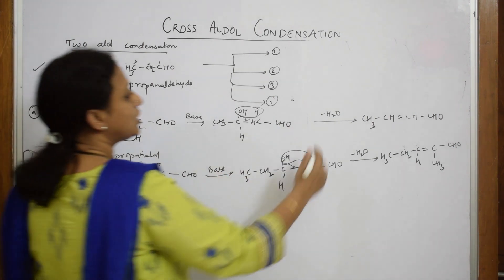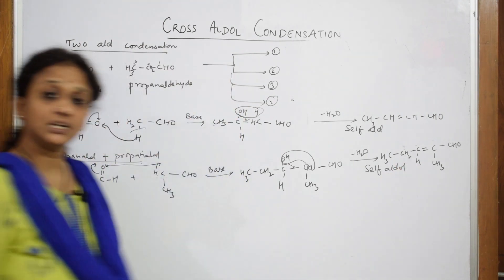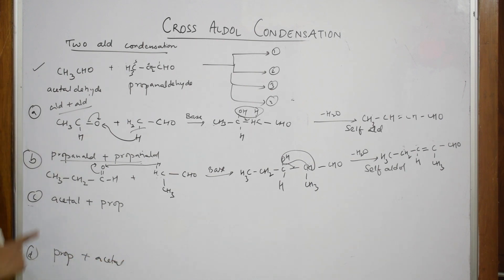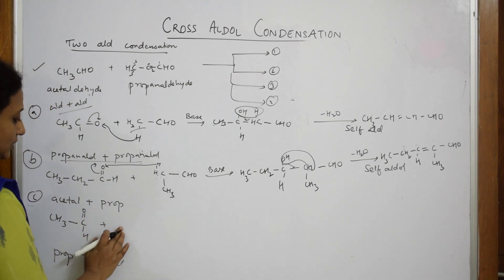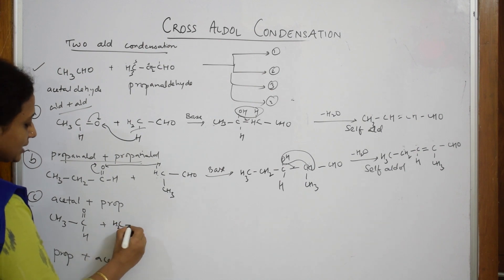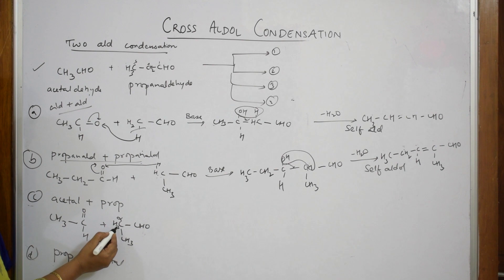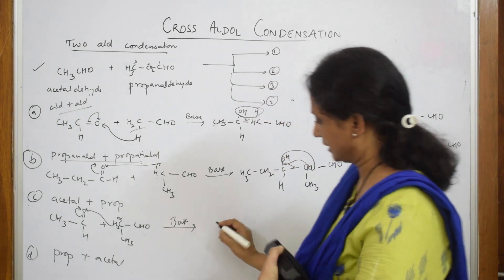These first two products — from acetaldehyde plus acetaldehyde, and propanaldehyde plus propanaldehyde — are called self-aldol condensation products. Now we look at the actual cross aldol. Third combination: acetaldehyde plus propanaldehyde. Take acetaldehyde (CH₃CHO) first. When writing propanaldehyde, always write the alpha hydrogen adjacent to the plus sign so you don't get confused. The alpha hydrogen CH₂ is next to the carbonyl. In step one, one hydrogen shifts to the oxygen.